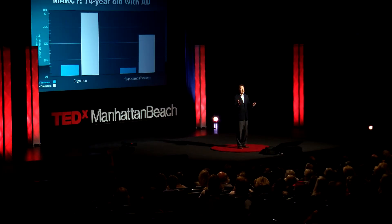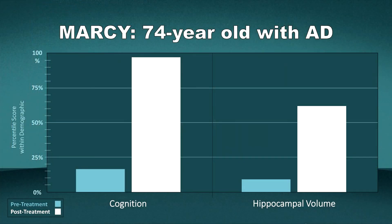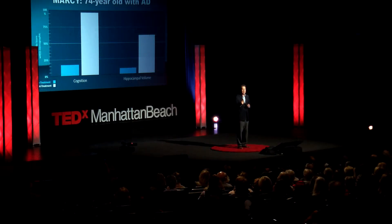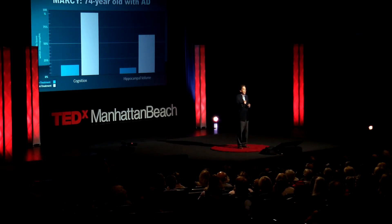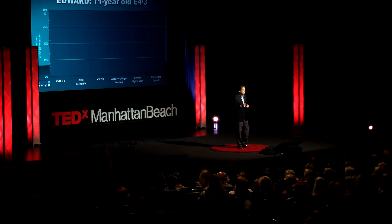Here are a couple of examples. Marci had low hormones, low nutrients, and a chronic undiagnosed infection. And you can see how beautifully she did, not only with her cognitive scoring, but also with her hippocampal volume. The hippocampus is a critical region of the brain for memory, and it is one that is heavily impacted in Alzheimer's disease.